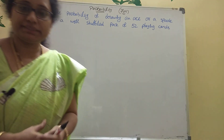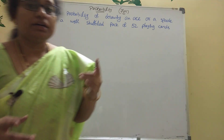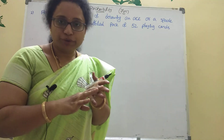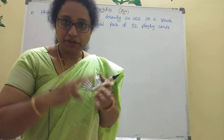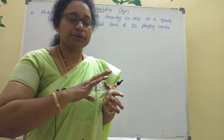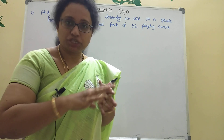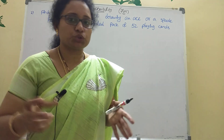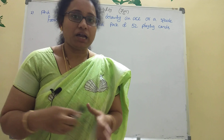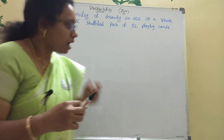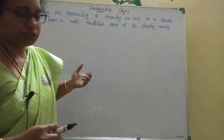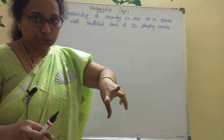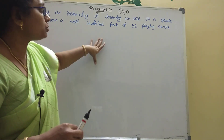This is the second problem. In seven marks, you have two problems. Listen here: find the probability of drawing an ace or a spade from a well-shuffled pack of 52 playing cards.